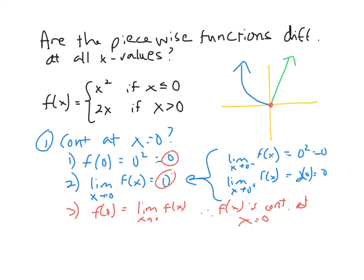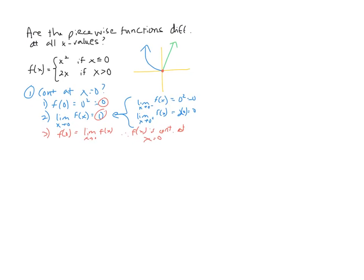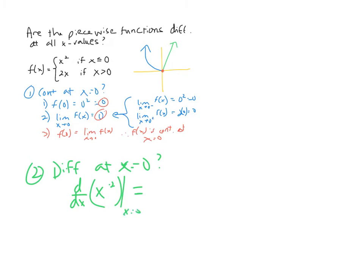Part two: let's check whether the derivative exists at that point. In order for the function to be differentiable at x equals zero, the left-hand slope must equal the right-hand slope. I'll take the derivative of the left-hand piece, which is x squared. Using our shortcuts, the derivative of x squared is 2x, and we evaluate that at x equals zero — we use a vertical bar notation to indicate where we're evaluating.